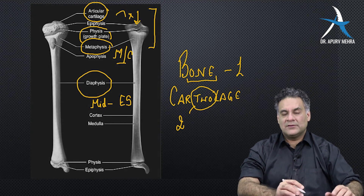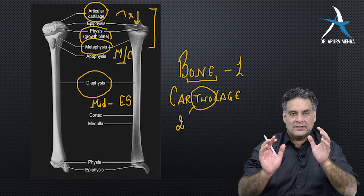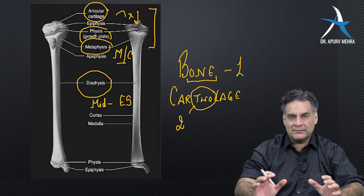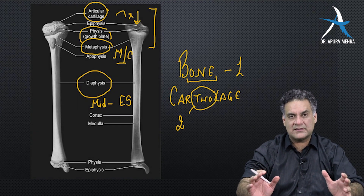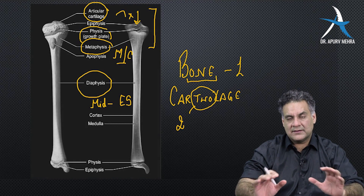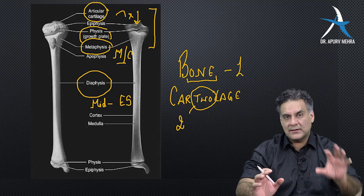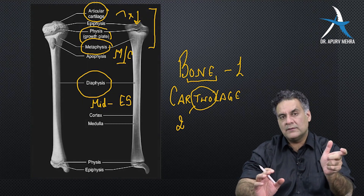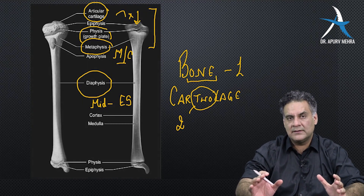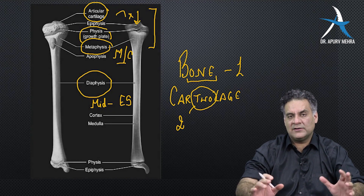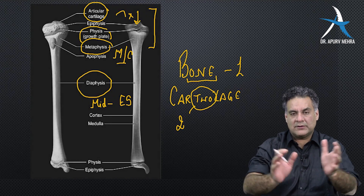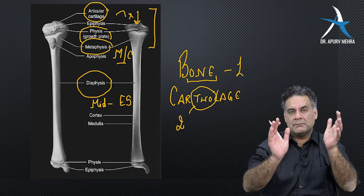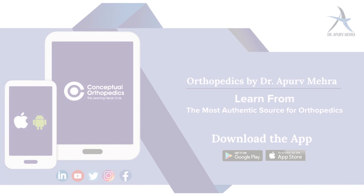To summarize: the metaphysis is the most common area for infections and tumors; the diaphysis is made of bone — remember Ewing's sarcoma; and cartilage is not seen on x-rays. That's how you compare bone on x-rays.